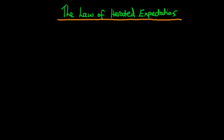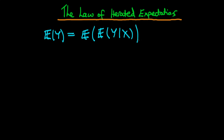In this video I want to provide an introduction to the law of iterated expectations and I also hope to provide some intuition behind the maths. Mathematically, what the law of iterated expectations says is that the unconditional expectation of a random variable y is equal to the expected value of the expected value of y given some other random variable x. That's just the mathematical statement of the law of iterated expectations — but what does it actually mean?